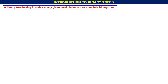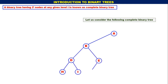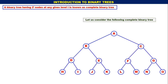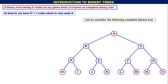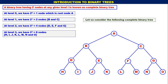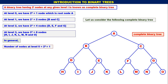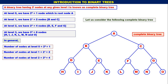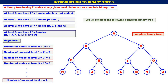A binary tree having 2 to the power of i nodes at any given level i is known as a complete binary tree. At level 0, we have only root node A — that is 2 to the power of 0, equals 1. At level 1, we have 2 nodes: B and C. At level 2, we have 2 to the power of 2 = 4 nodes: D, E, F, and G. At level 3, we have 2 to the power of 3 = 8 nodes: H, I, J, K, L, M, N, and O. In general, the number of nodes at level n is 2 to the power of n.